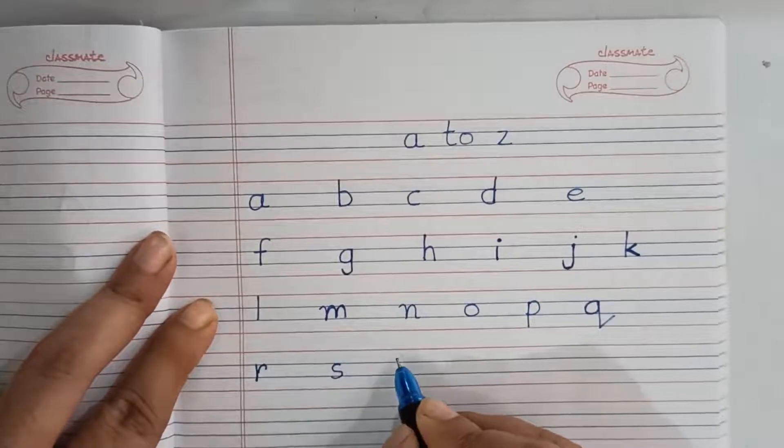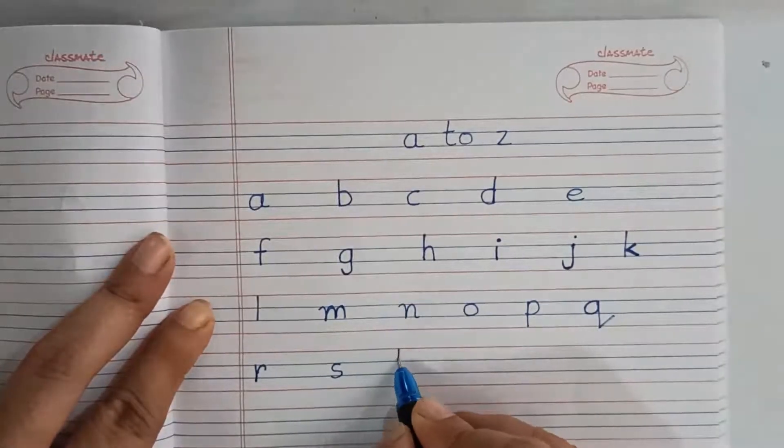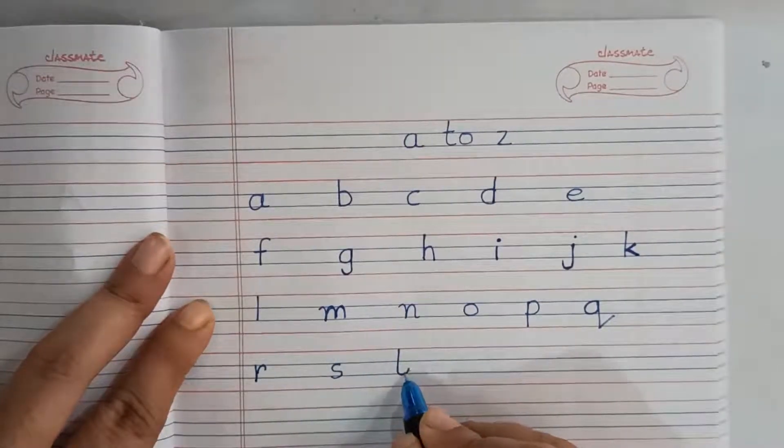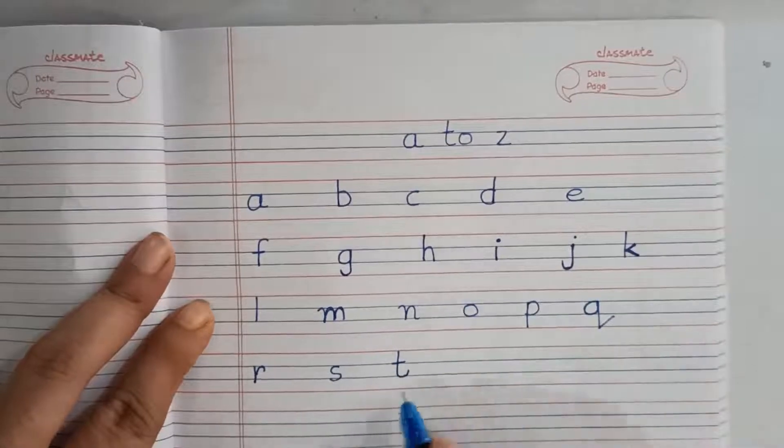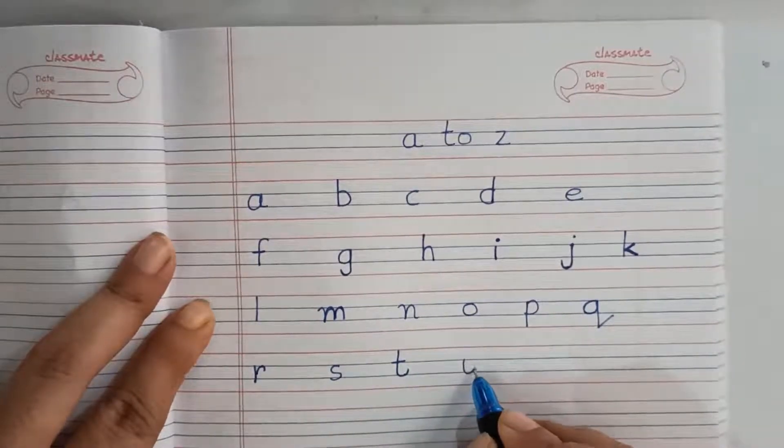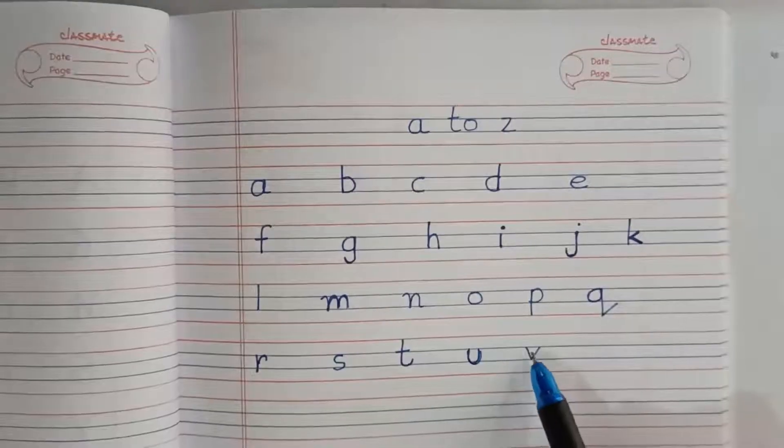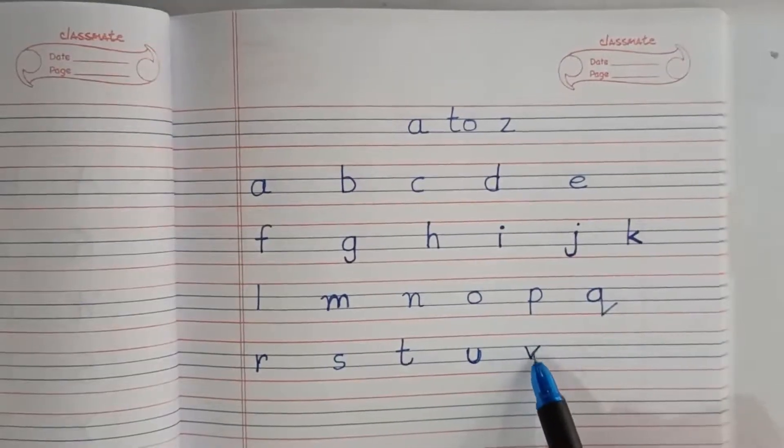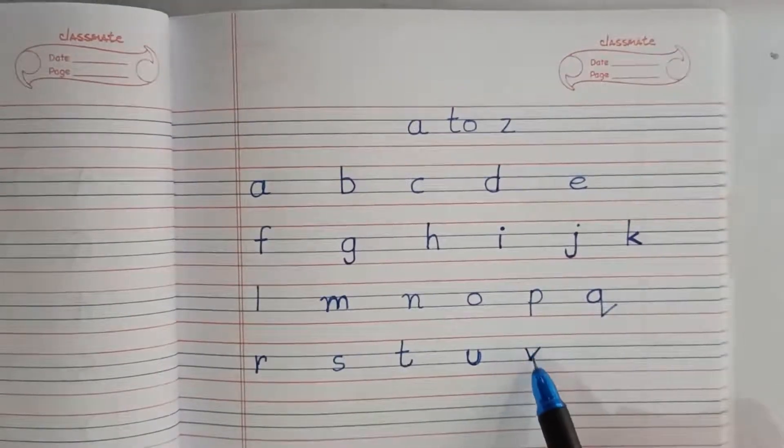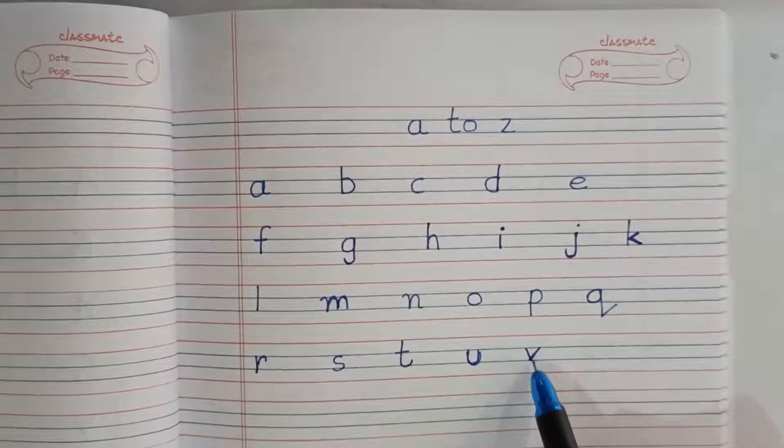S in the blue line. T, standing line, make small curve and cut. U in blue line, curve. V, two slant together, like capital V only, but you have to write in the blue line, center line only.